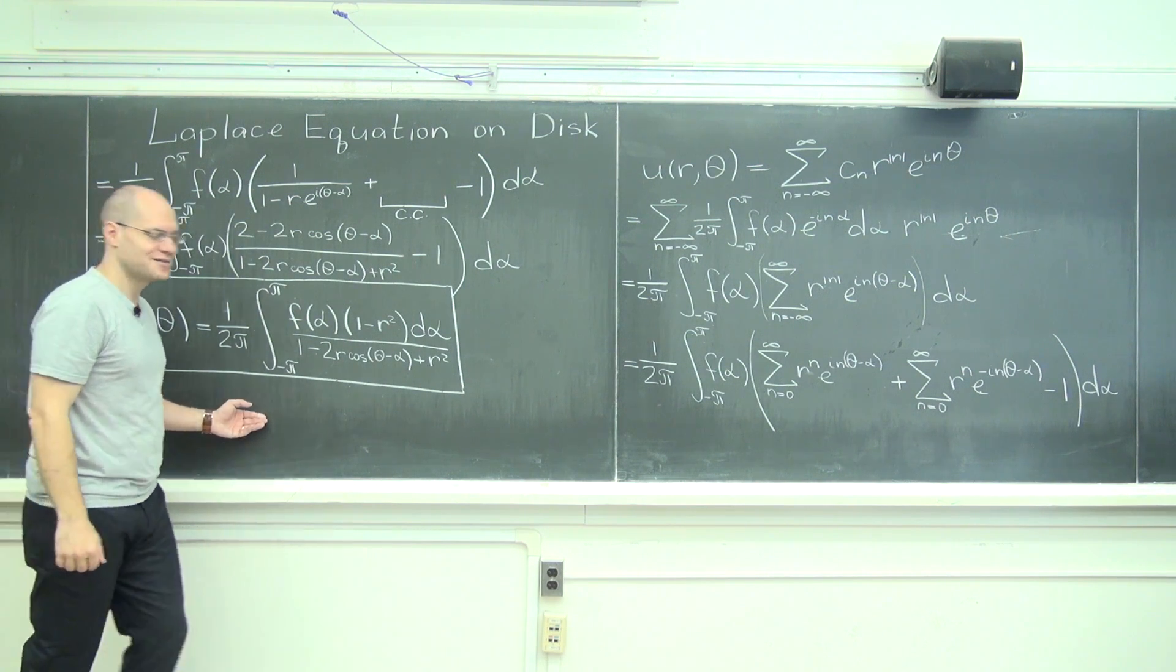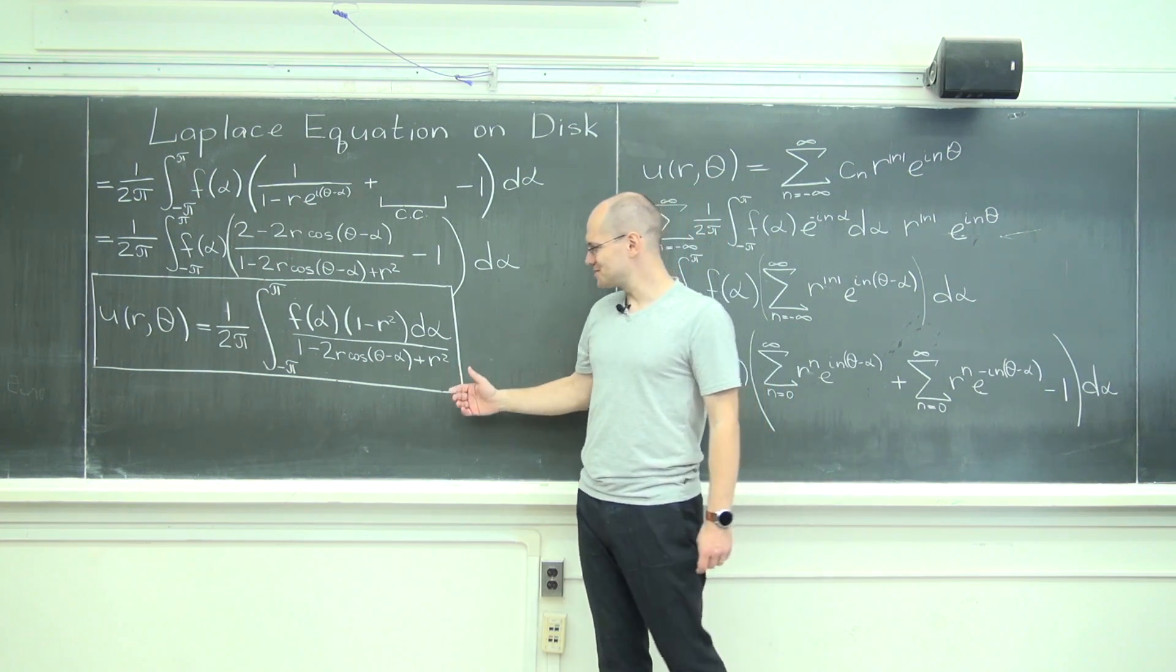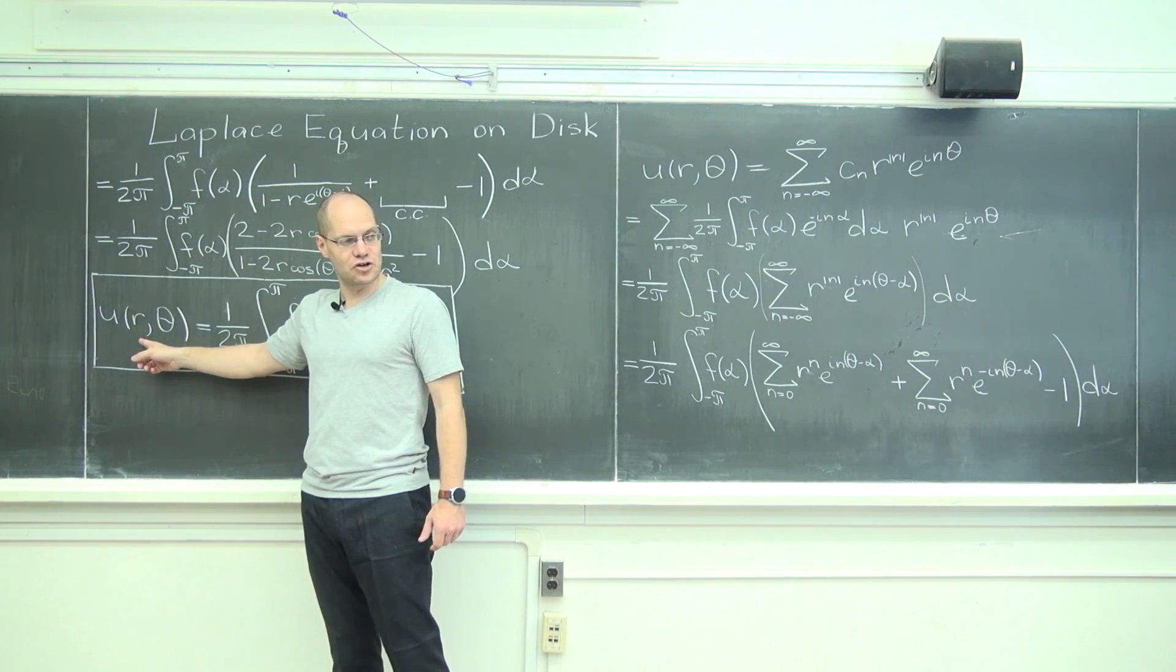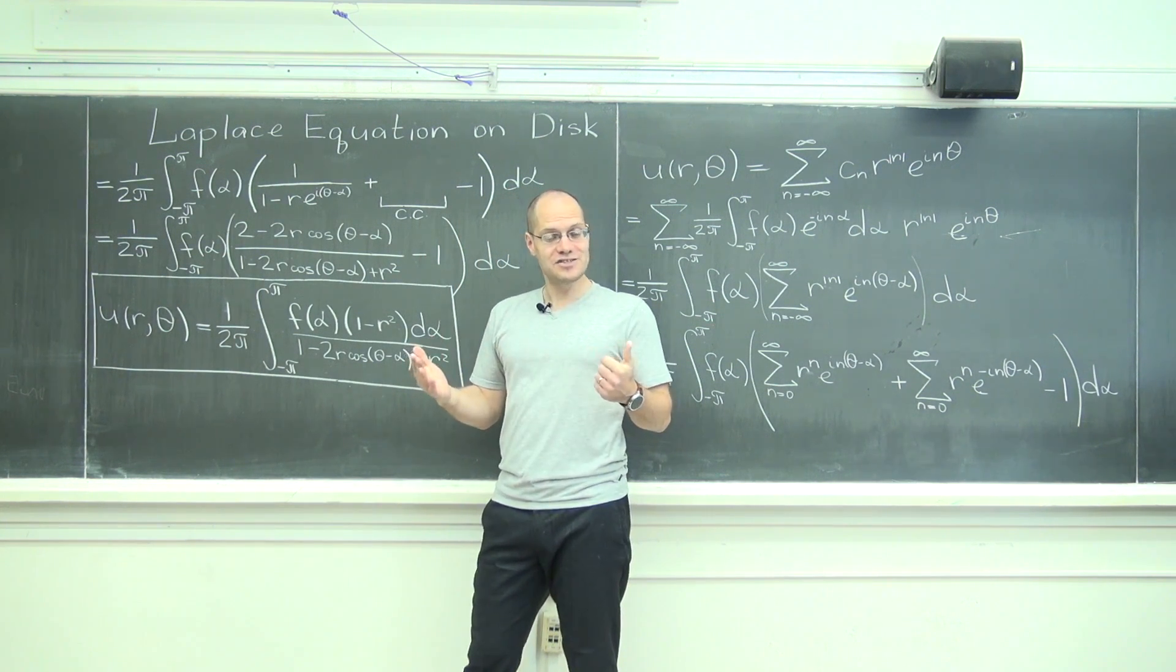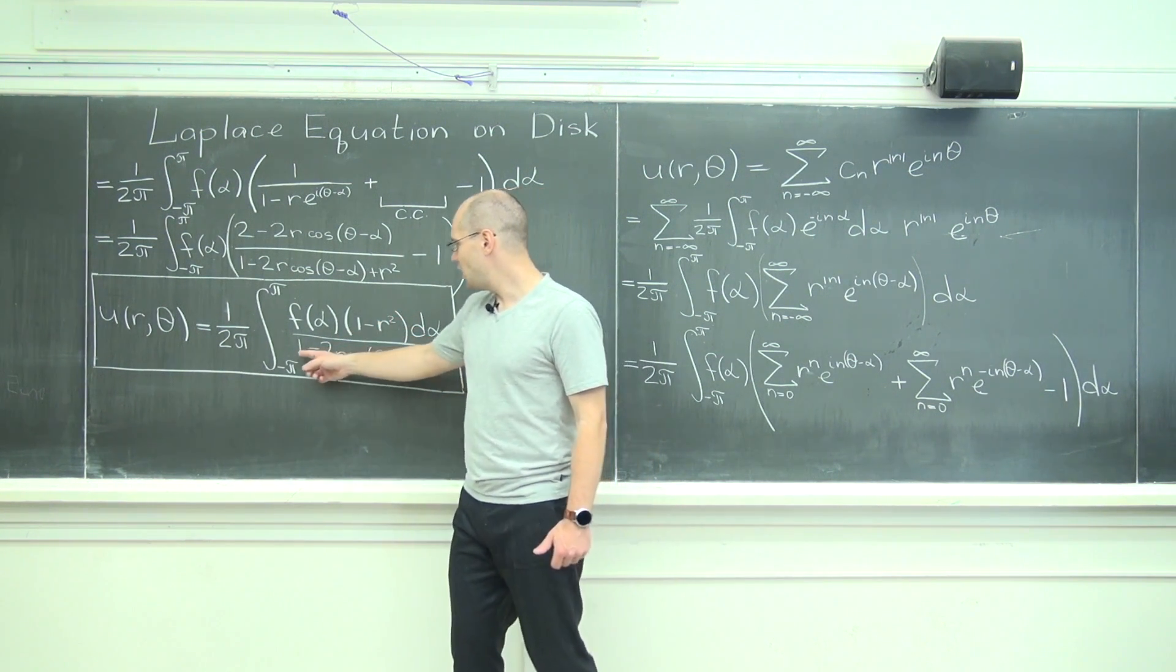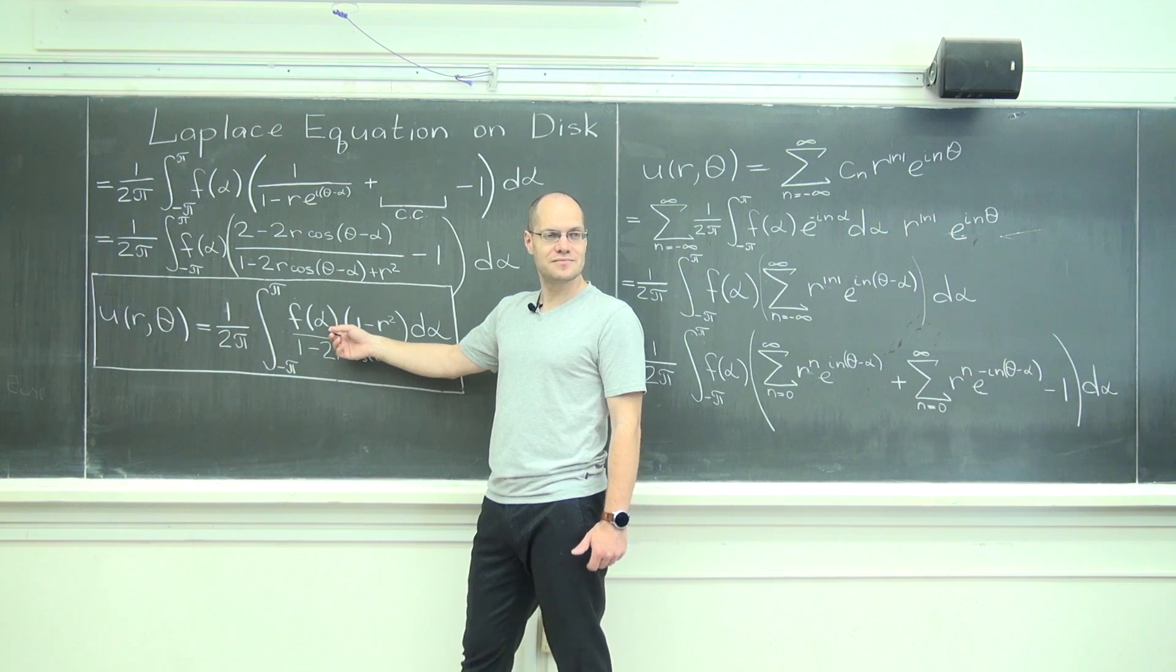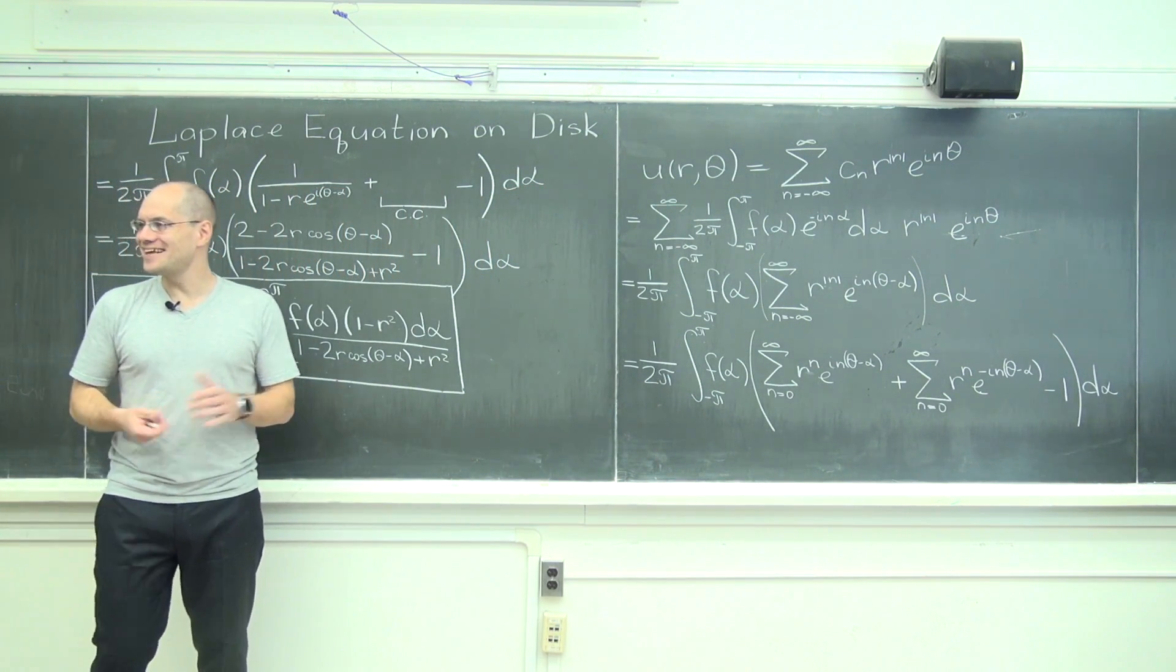This is called Poisson's formula. We'll use it for one thing only, for two things. Number one, to admire it. Take a moment. It really deserves more than that. And the other one, let's use this formula to prove, so to speak, that the value of the function at the center of the circle, in other words, when you plug in r equals zero, is the average of the values on the boundary. We know that to be the true property, so it has to be part of this expression. So, let's plug in r equals zero. On the bottom, we have one. And on top, we have f of alpha. So, the value at r equals zero is simply one over two pi, the integral of f of alpha. Gorgeous. There you go. The proof is complete. That's Poisson's formula.